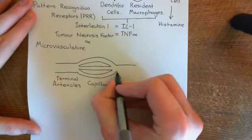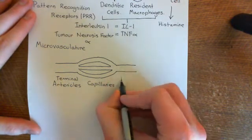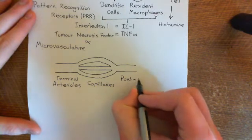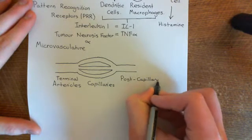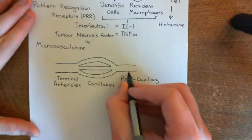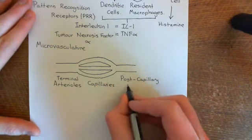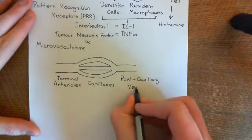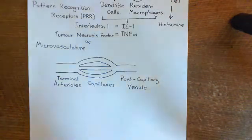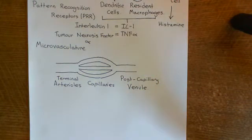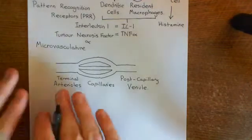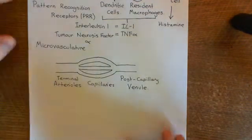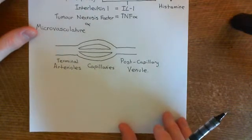The capillaries will reconverge to create a post-capillary venule. The term venule covers a huge scope of different size blood vessels, so to clarify that you mean the first venule after capillaries — the absolutely tiny little venules — you can put post-capillary in front of the word venule to clarify that. So this is a post-capillary venule. Let's have a little talk about the structure of these three types of blood vessels: terminal arterioles, capillaries, and post-capillary venules.